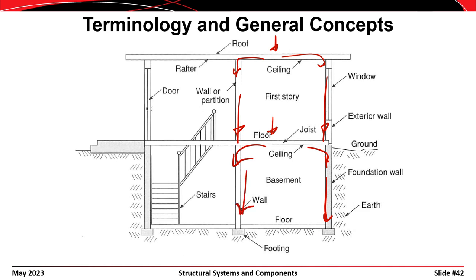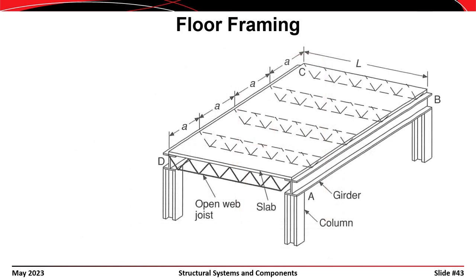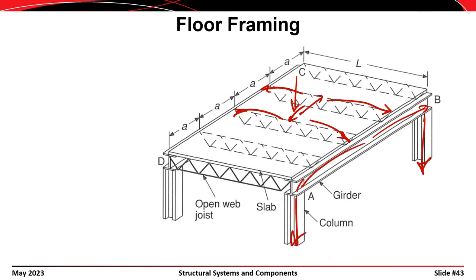In this case you have footings. Here's another example of a simple floor system: a gravity load applied to the deck or slab is carried sideways to the joists — in this case, open web steel joists. Those joists carry the load out to the girders, which support other beam elements. Then the girders carry the load to the columns, and the columns carry the load into the foundations. That's the load path.